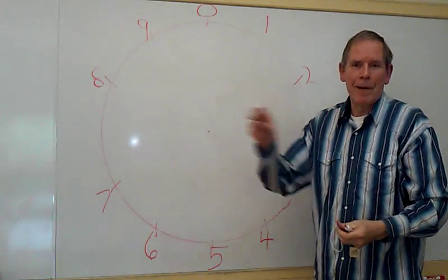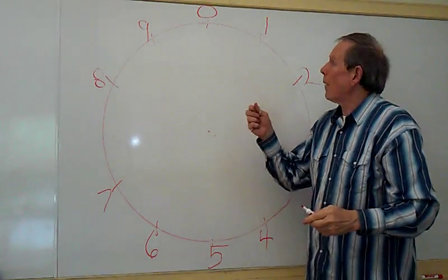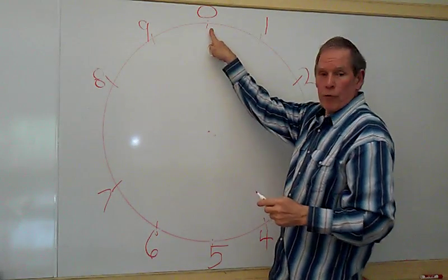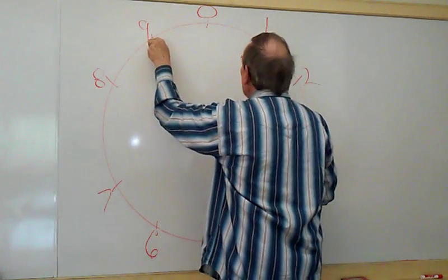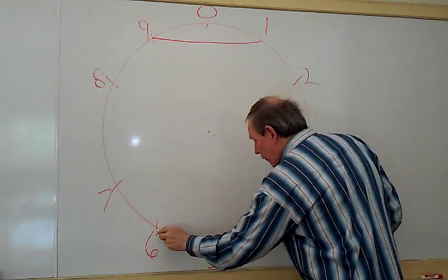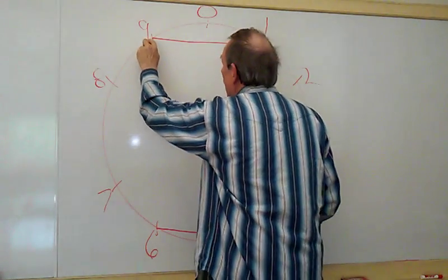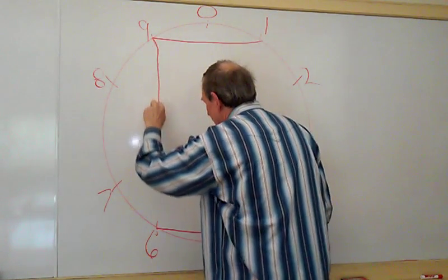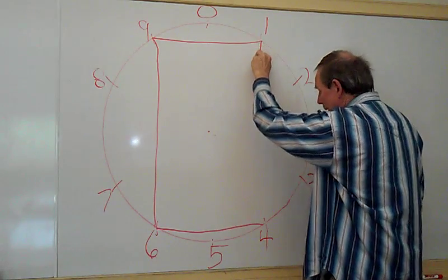Now we're going to make our boxes. Our boxes are the numbers close to zero and close to five. That's one and nine. We draw a line from one to nine and from four to six, six to four, then down from six to nine and from one to four. So we've made a box.